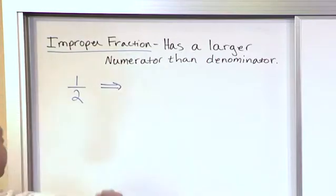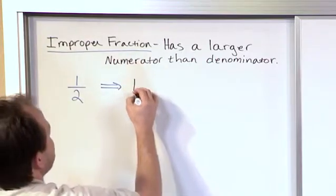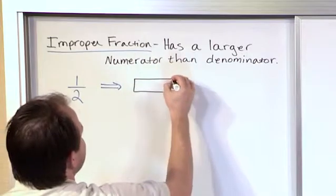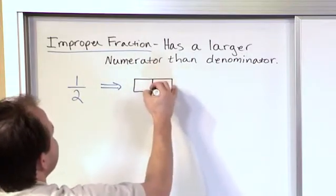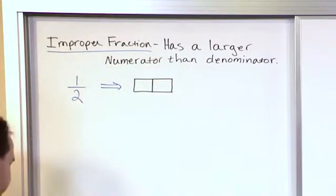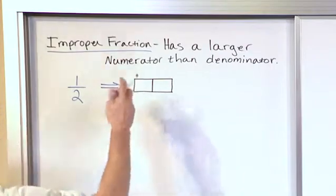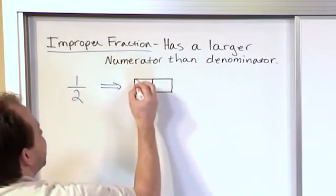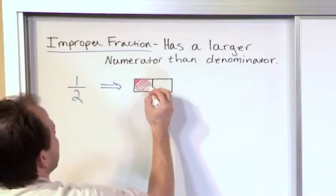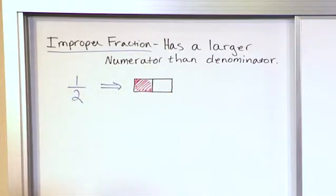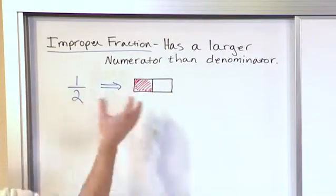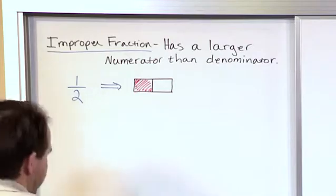And we've done this enough times, but just to quickly review, what this means is you take an object—let's say we have a candy bar here—and we cut it into two pieces because that's the bottom number. And then we take this candy bar and we only actually have one of the pieces, or let's say we give one away, and in that case we would have given away one half of the candy bar. And this is a regular fraction.